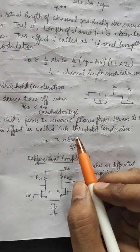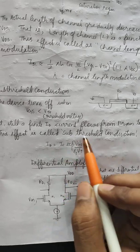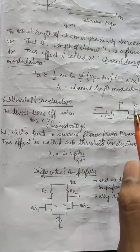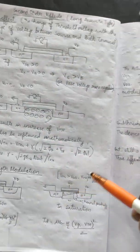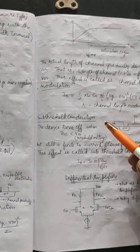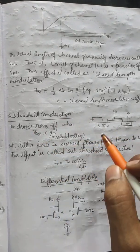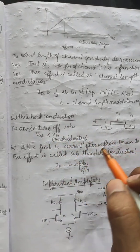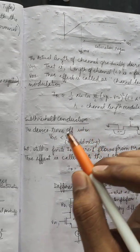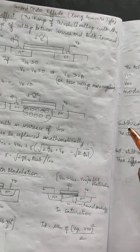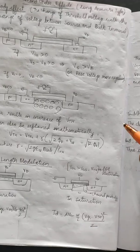This sub-threshold current is exponentially related as shown. These are the three effects which are very important and most probably you will have to explain them in more detail. This topic is mostly given as a long-answer type question.